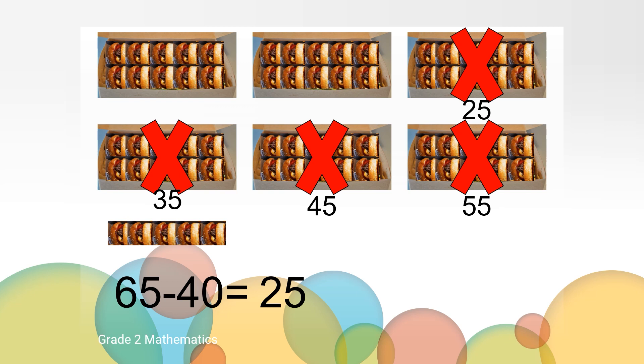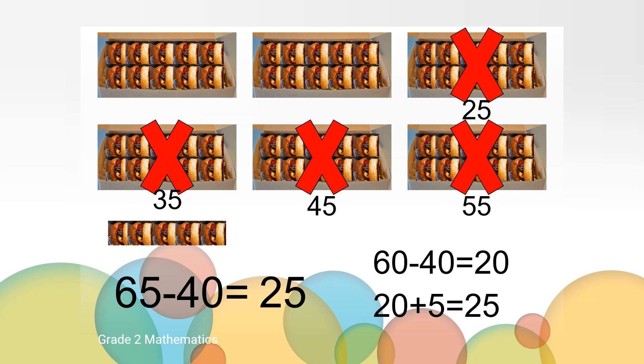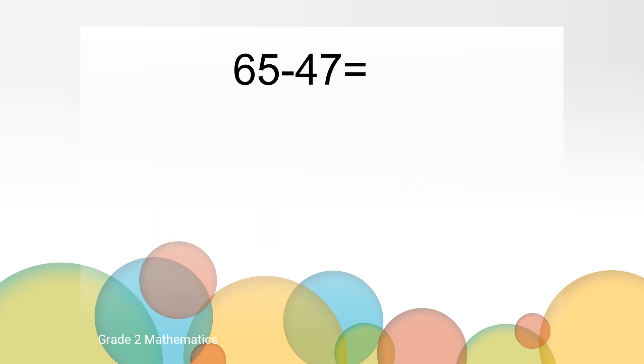Or maybe you thought about six tens, 60, minus four tens, 40, is 20. But our ones place didn't change. We still have five burgers here. So 20 plus five equals 25. You had some great thinking around our hamburger problem with 65 minus 40.